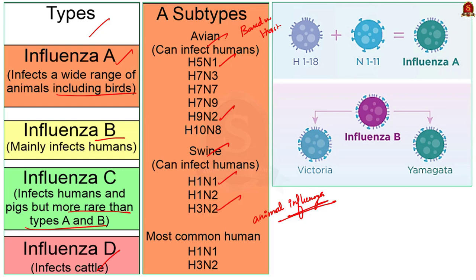All of these animal influenza type A viruses are distinct from human influenza viruses and they do not easily transmit among humans. But know that there is still a chance of transmission from animals to humans.